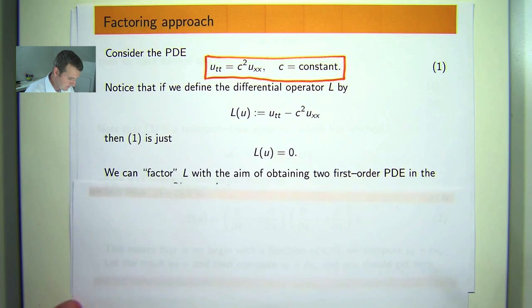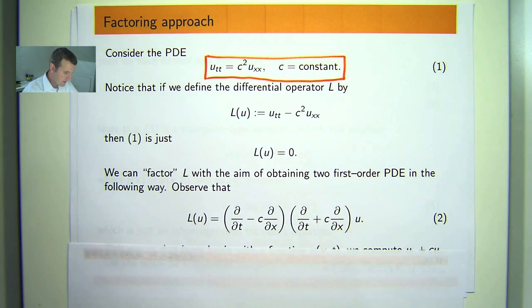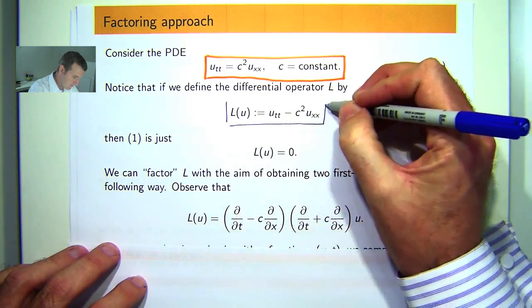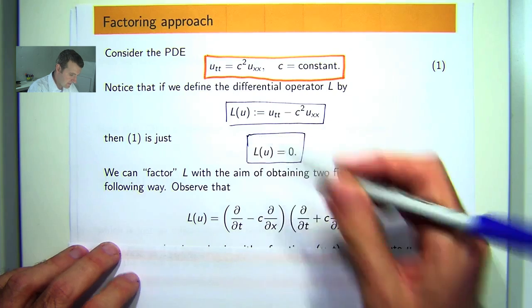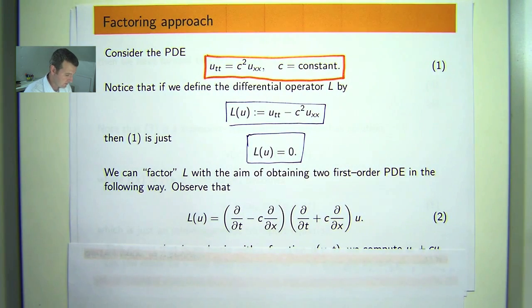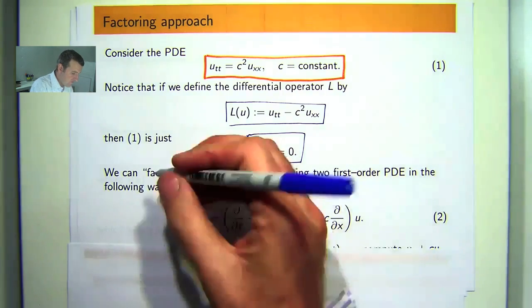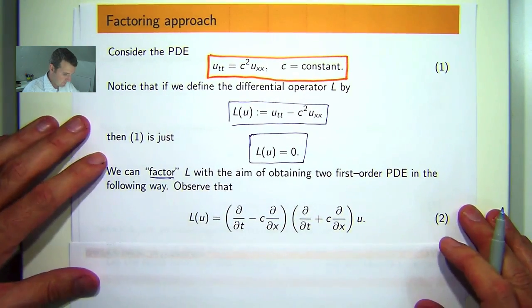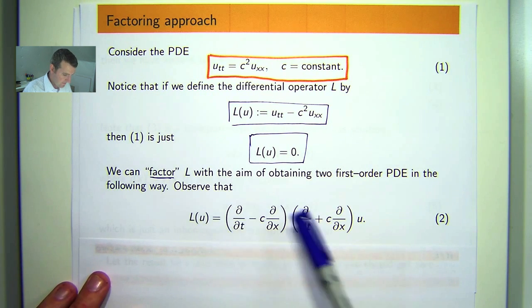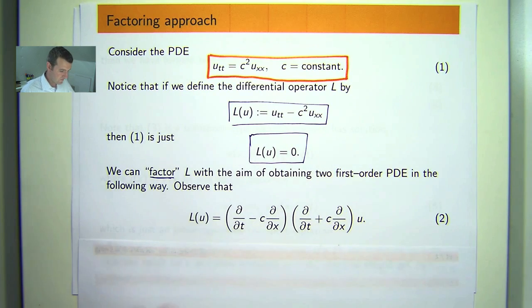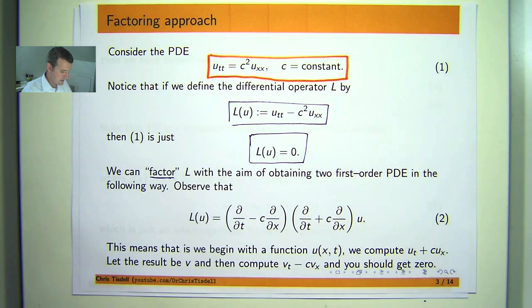So if we define an operator big L just by this, so just move that to the other side, then the PDE becomes compactly written as L(u) equals zero. What we're going to do is factor this operator L so that we obtain two first order linear partial differential equations, which we know how to solve. Now observe that L can be factored into this sort of form.